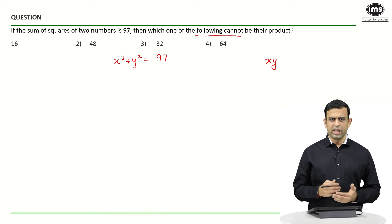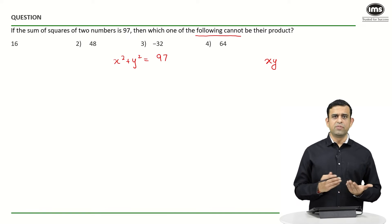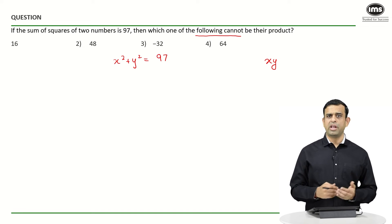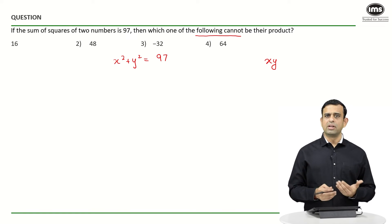So again, if I ask you a simple question: if the sum is known to you and we have to comment about the product, what property are we going to use? And the definite answer basically has to be AM ≥ GM.